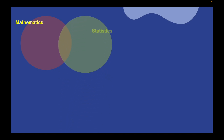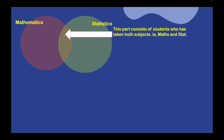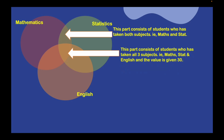The general approach for solving this type of question is to consider a circle named Mathematics, containing all students who opted for that course, and another circle named Statistics with all students who opted for Statistics. The yellow overlapping region between the two circles represents students who took both Mathematics and Statistics. Adding a third circle for English, the region where all three circles overlap represents students who took all 3 subjects, which is given as 30.